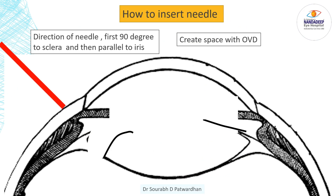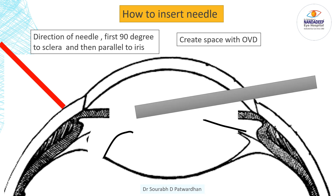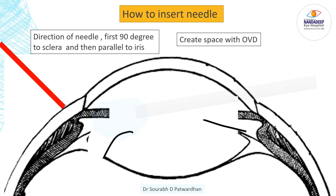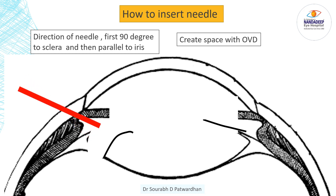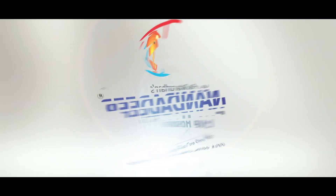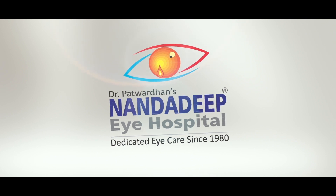Another important tip is how to insert a needle while fixing the bag to the sclera. The important thing is to create space between the iris and the bag by using proper OVD, and then you insert the needle first at 90 degrees until it penetrates the sclera and then turn it so that it becomes parallel to the iris. This avoids trauma to the iris root and it stays behind the iris.